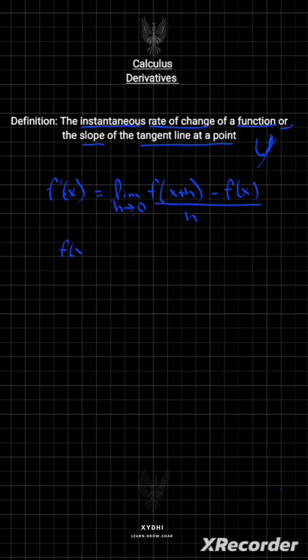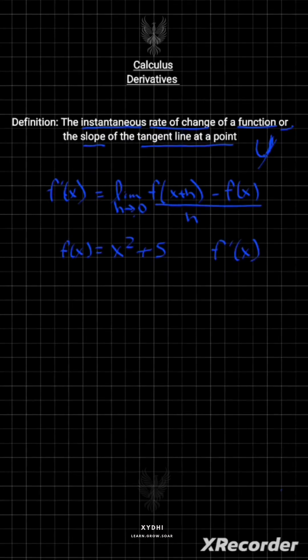Let's say we have f(x) = x² + 5, and we need to find the derivative. We can use this formula to find it.